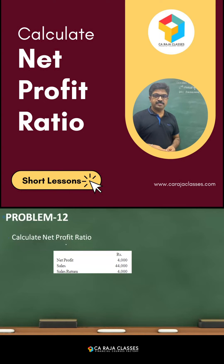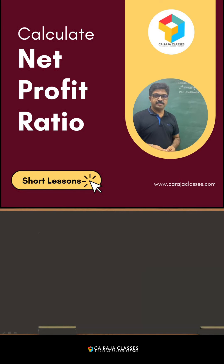Calculate net profit ratio. Net profit is 4000. Sales and sales returns are 44000 and 4000. So what is the net profit ratio? The net profit ratio is nothing but net profit divided by sales into 100.